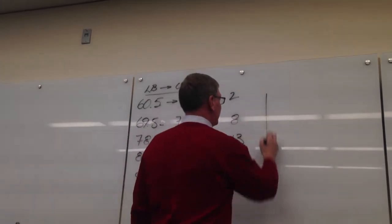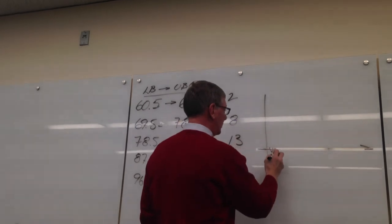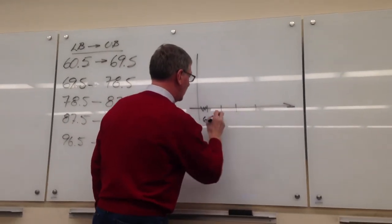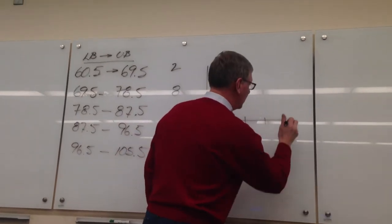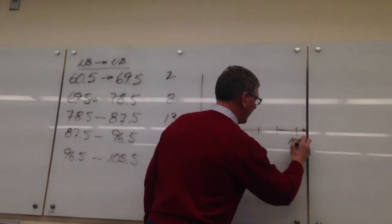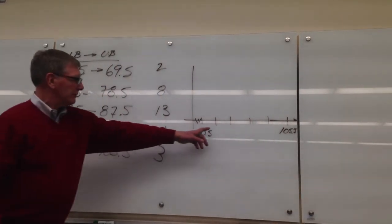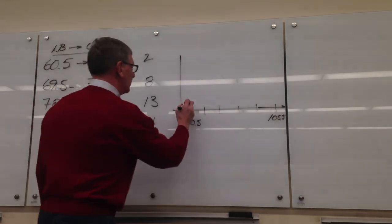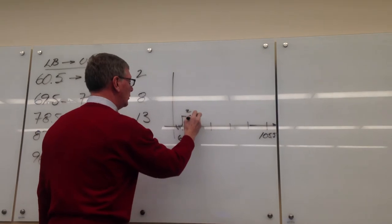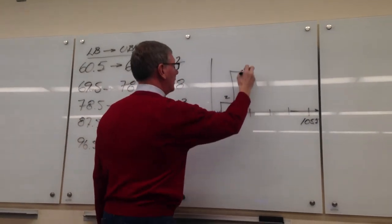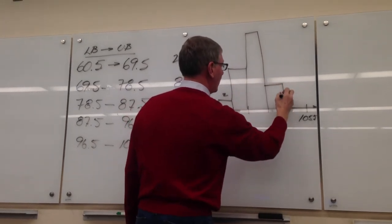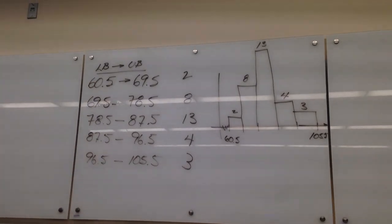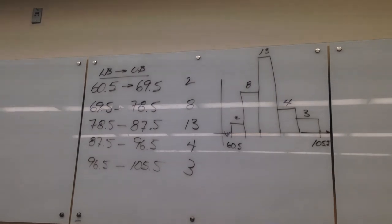Now, if I draw a very bad histogram, I put my broken symbol there, 60.5. Then there's 1, 2, 3, 4, 5. This is 105. And of course, these are 69, this is 78, this is 87, this is 96. And it looks like this. Let's say that goes up to 2. 8. 13. 4. And 3. So that's what it should look like. That's what our distribution of the data looks like. That make sense, everybody? Kind of like what we did last time.